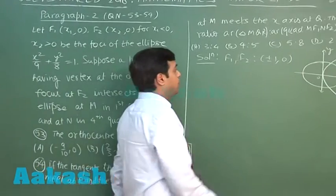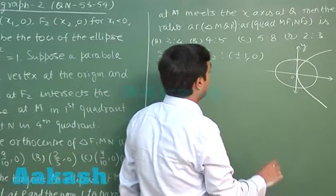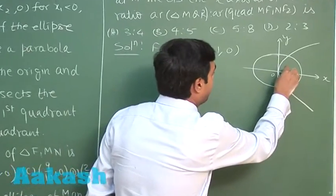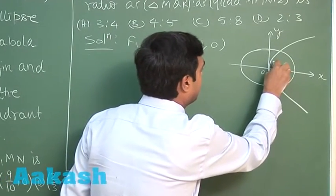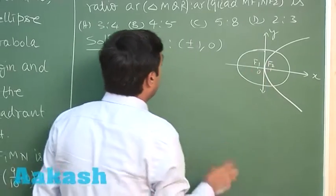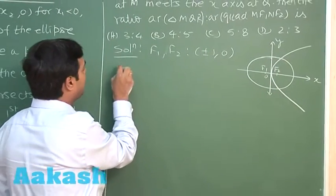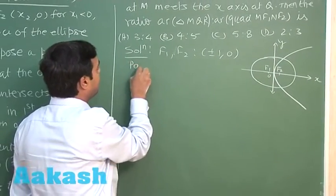Right, so that gives me plus minus 1 comma 0. So this is focus F2 and here we have F1. Now, once we got F1, F2, we can write the equation for parabola now.